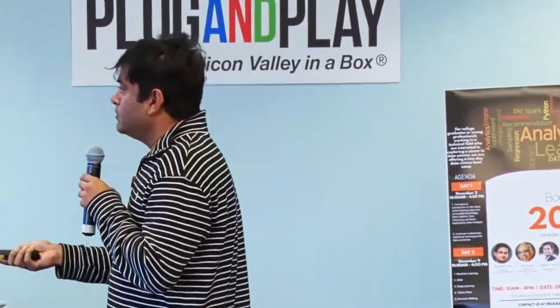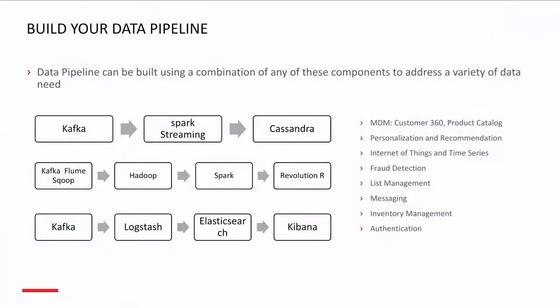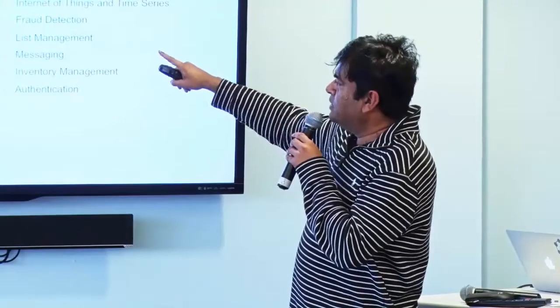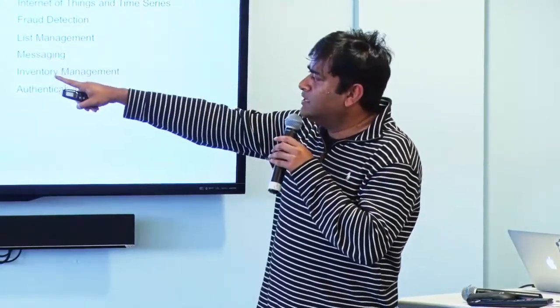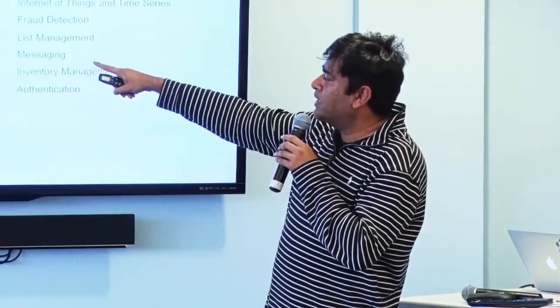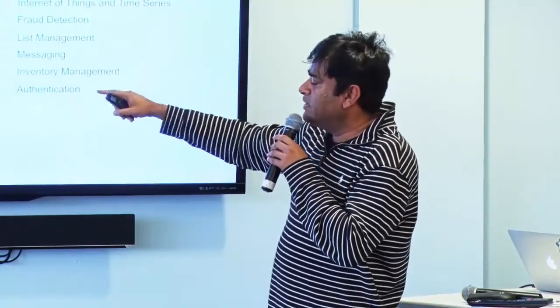Here are some pipeline examples I've actually built. The Kafka, Spark Streaming, Cassandra stack was an Internet of Things and time series example. The Hadoop, Spark, and R stack was the US Navy project. The Kafka, Logstash, Elasticsearch, and Kibana stack was more of a log data use case.